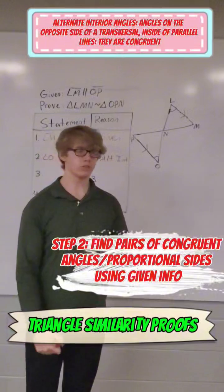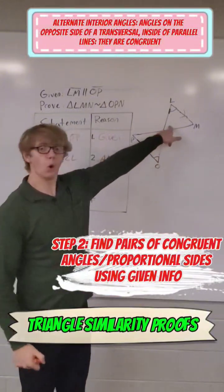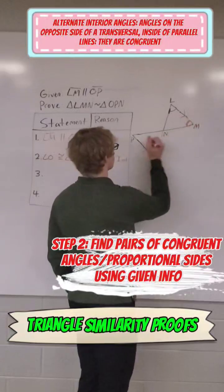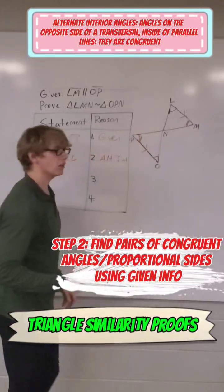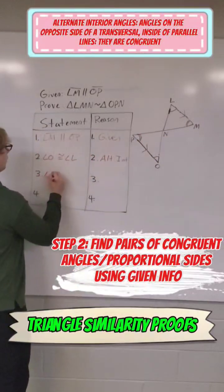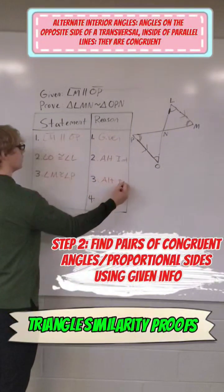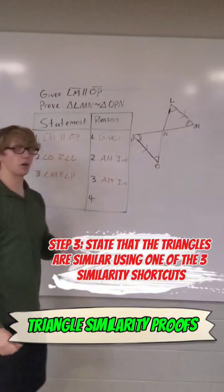Now we can go two different routes. We have vertical angles right here, or we could just use the fact that they're parallel again and say that angle M is congruent to angle P. Those parallel lines are put into work. We can say that angle M is congruent to angle P using the exact same reason as before: alternate interior angles are congruent.